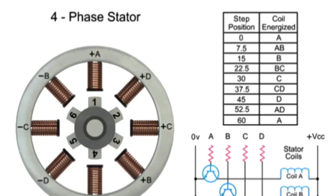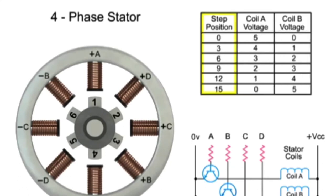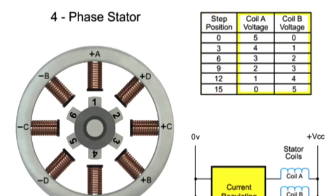Microstepping controls the current in the motor winding to a degree that further subdivides the number of positions between poles. To achieve microstepping, the coils are only partially energized. As we apply a maximum voltage of 5 VDC to coil A and a minimum voltage of 0 VDC to coil B, rotor position 1 will line up.